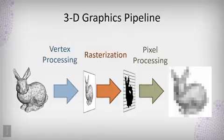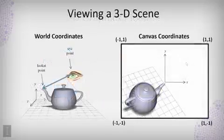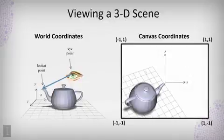Then pixel processing, which takes those pixel regions and figures out what color should be on their interior. We also will need to view three-dimensional scenes. We need to figure out where is the eye in the scene.